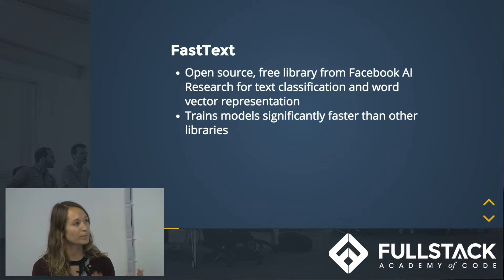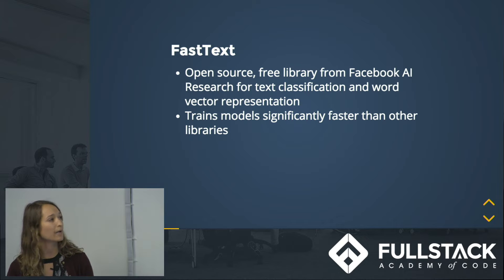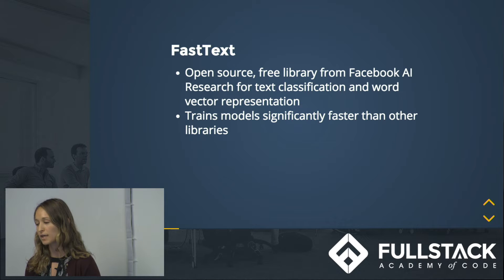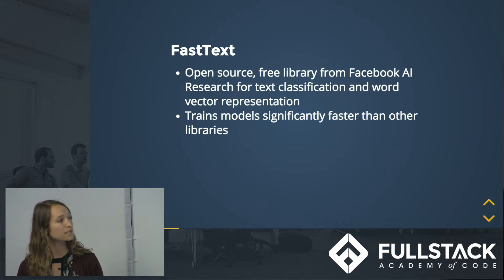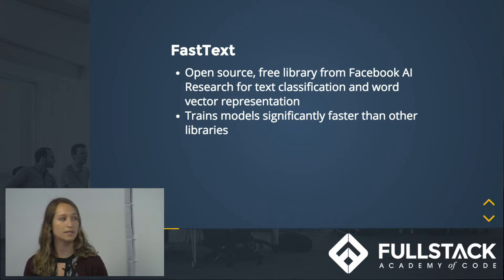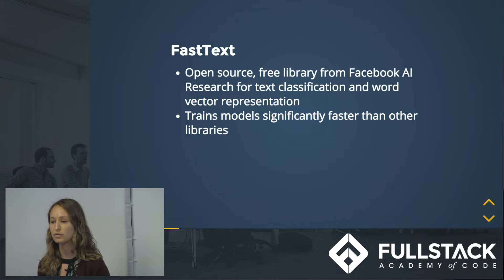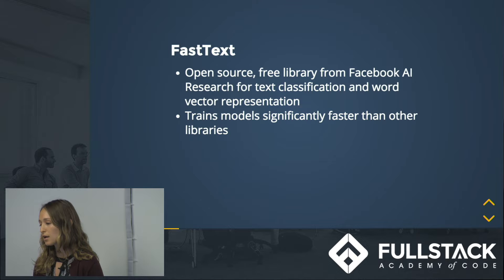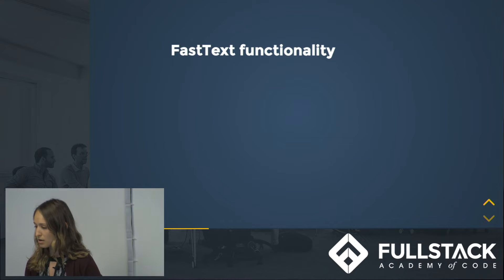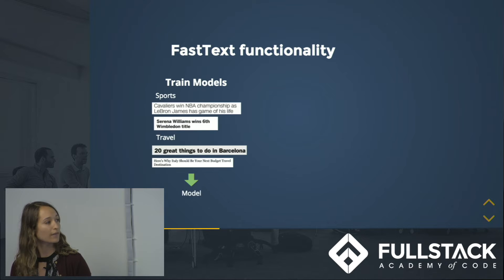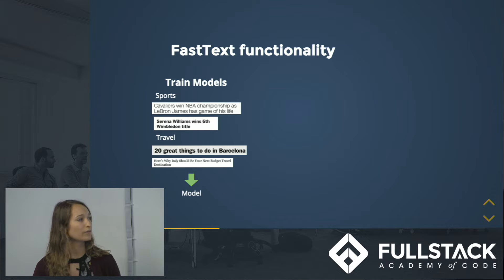So how do we actually do this? Enter fastText. FastText is an open-source, free library from Facebook used for classifying text. One of the cool things about fastText is that the methods it uses help train models significantly faster than other methods being used in other libraries, and we'll talk about the reasons for that in just a little bit.